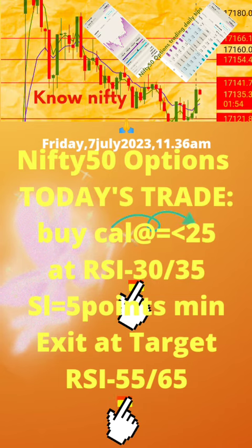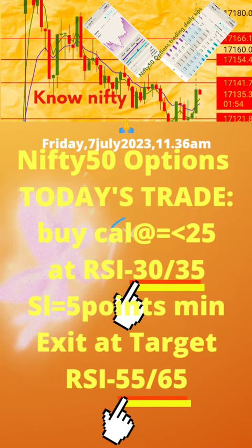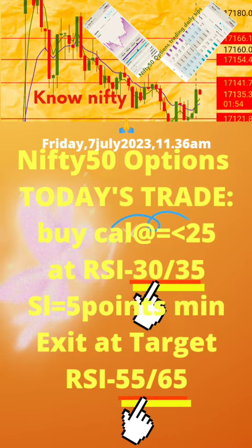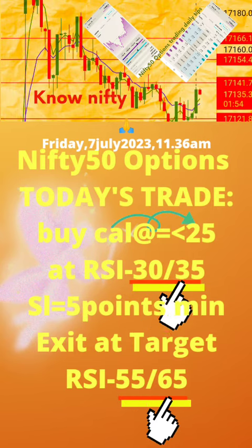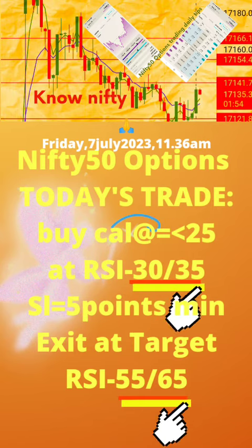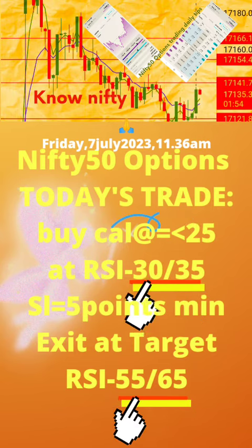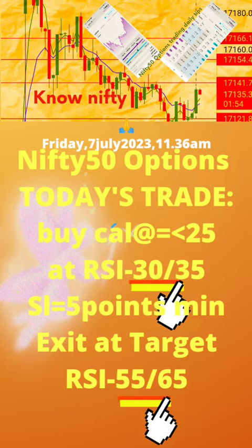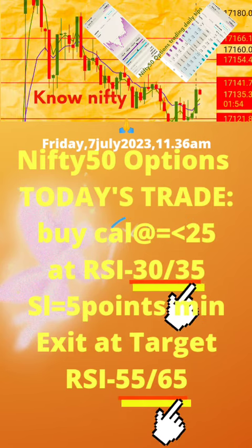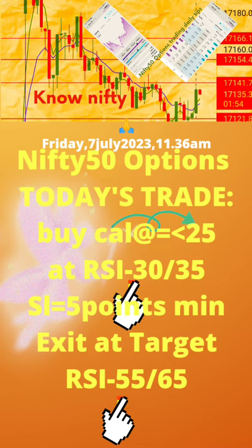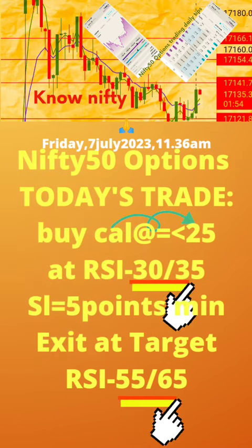Please note: 1. Today's time of post is also mentioned. 2. Buy put or call at the strike price with premium value equal to or less than 25, at RSI value updated daily. 3. Apply stop loss of minimum 5 points. 4. Exit at target RSI value, updated daily. Now take today's trade as per the updates in this page.